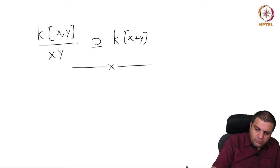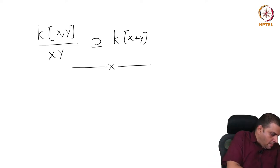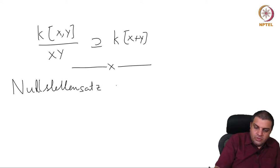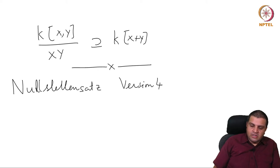Now we will prove the Noether normalization lemma in a little while. But before that, we want to prove the Nullstellensatz. We will call it Nullstellensatz version 3 or version 4. We started with the first version which said something about V(I) being empty. The second version was about maximal ideals. The third version was what we called classical Nullstellensatz or Hilbert's Nullstellensatz about the radical of the ideal. And now we are in version 4.